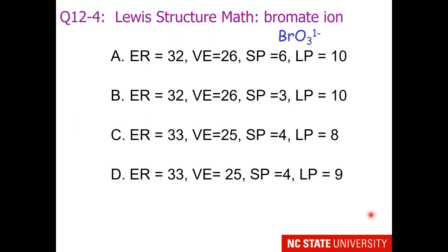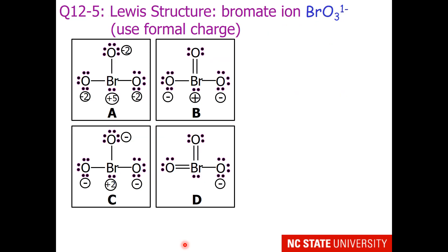Now let's practice with the bromate ion. Once again, do not forget to add the charge to your valence electrons. And how about drawing the ion now and adding your formal charge? Which structure is correct?